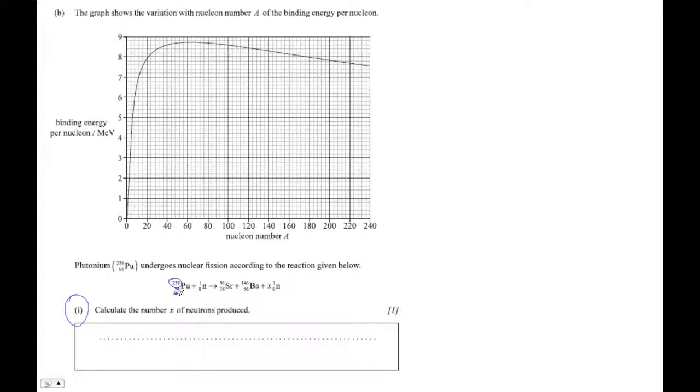Okay, on the bottom. So these guys, these guys have to, bottom numbers have to add up. So 94 plus 0 is 38 plus 56, right? No problem there.